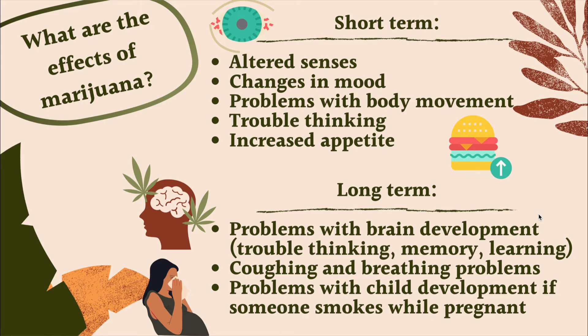When you're under 18, your brain is still developing — it develops up until you turn 25. During this time your brain is growing and getting better every single day. Using drugs like marijuana can cause changes in that brain development. Long-term, teenagers can have problems with brain development, including trouble thinking, memorizing things, and learning. Some people who smoke every day end up coughing a lot and having breathing problems. People who become pregnant and smoke marijuana can also have problems with child development.